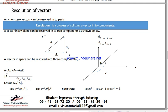Vector A is composed of AX, AY, AZ components. We resolve AX in the X direction, AY in the Y direction, AZ in the Z direction. The unit vectors are I, J, K in the X, Y, and Z directions. The cosine of angle alpha equals AX divided by the magnitude of A.